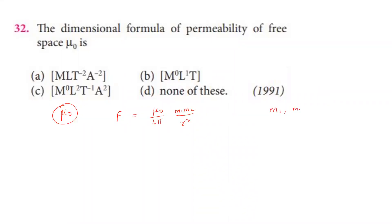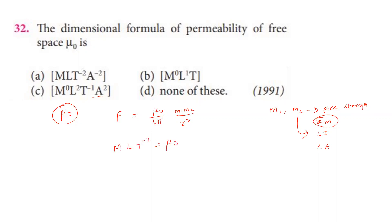Pole strength unit is ampere-meter, so its dimension formula is IL (current times length). So M1 and M2 each have dimension LA. Rearranging for μ₀: μ₀ equals F times R squared divided by M1 times M2. Force is MLT⁻², R² is L², M1 M2 is L²A².